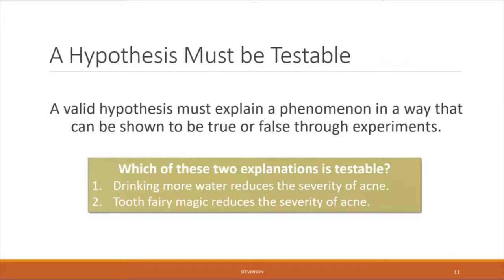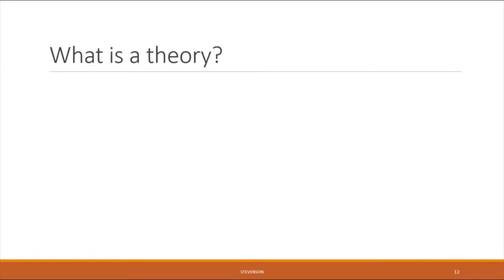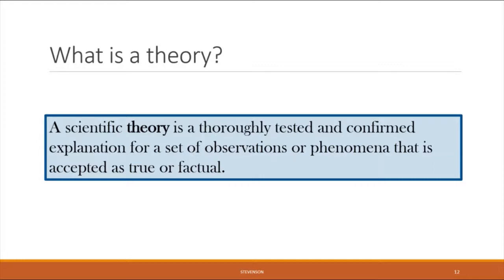This brings us to the concept of a theory. A scientific theory is defined as a thoroughly tested and confirmed explanation for a set of observations or phenomena that is accepted as true or factual. This is a harder concept because the word is used differently in everyday language. Often people use 'theory' to mean a guess — for example, 'I have a theory that my mom is hiding my birthday present under her bed.' But in science, the word theory is taken very seriously and only used under specific circumstances.